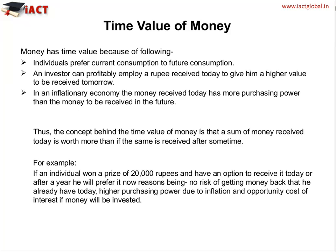For example, if an individual wins a prize of Rs.20,000 and has the option to receive it either today or after one year, he will prefer to have it now because: there will be no risk of getting the money back later, there is higher purchasing power due to inflation, and he may invest that money and earn the opportunity cost of interest. These are the reasons which help us understand that money has time value.